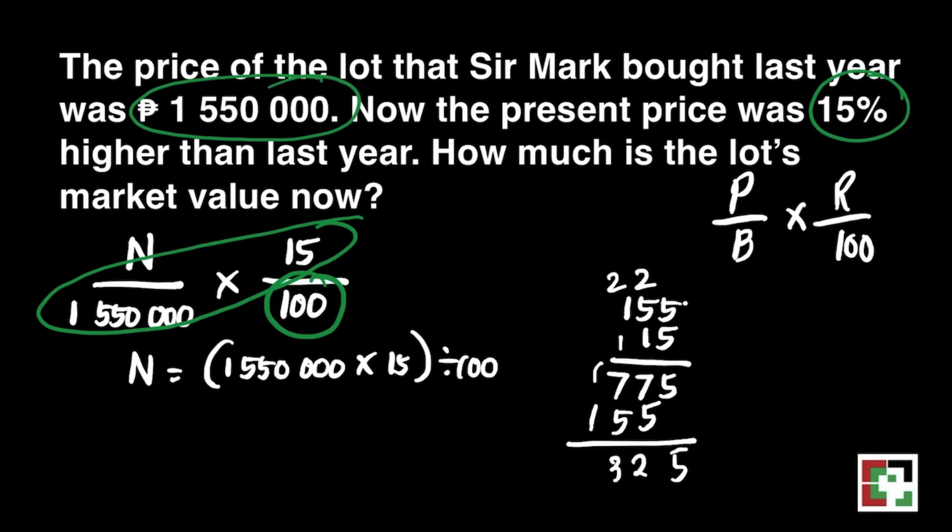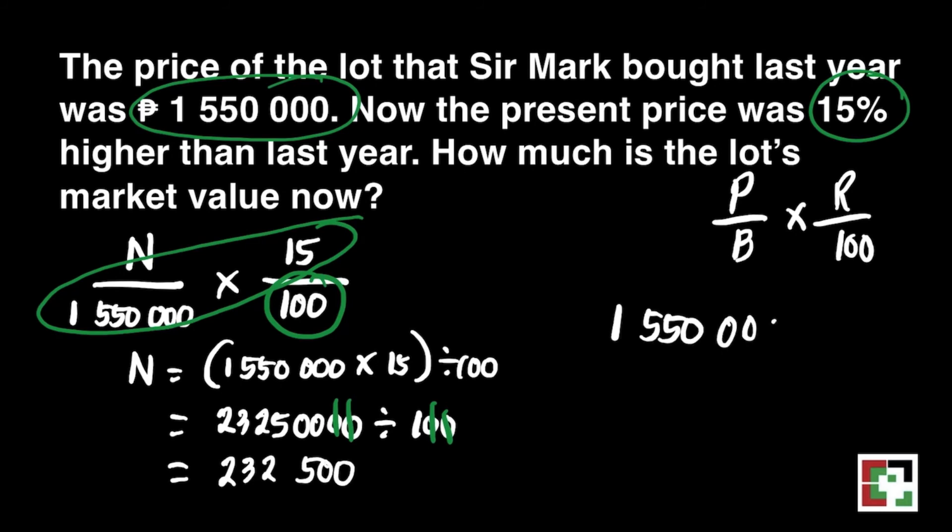That's 1,550,000 times 15 divided by 100. We can just simply multiply 155 and 15. And then we will just affix the 4 zeros. That will give us 23,250,000 divided by 100. Just cancel zeros. That will give us 232,500. But that's not yet the final answer because we still have to add it to 1,550,000.